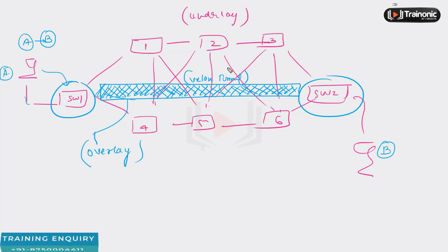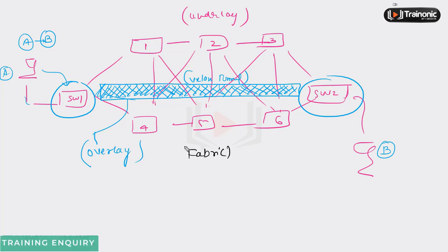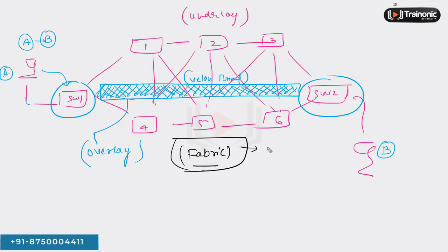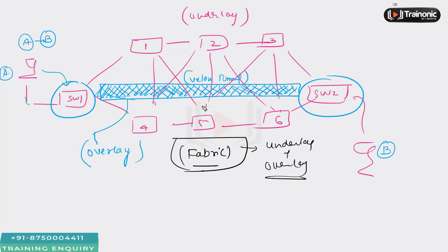Combining the underlay and overlay together — which provides data delivery across all interfaces or across the network — we call that the fabric. The SDA fabric consists of both underlay and overlay. The term 'fabric' simply refers to the combination of underlay and overlay, and together they provide all the features required to deliver data across the network.